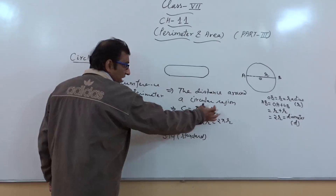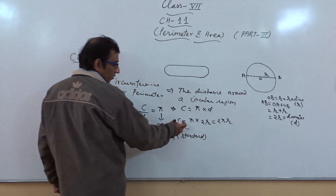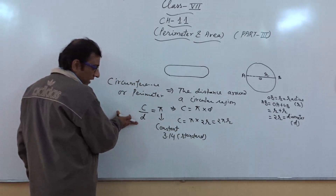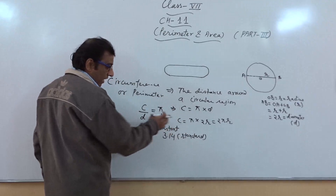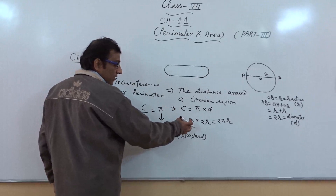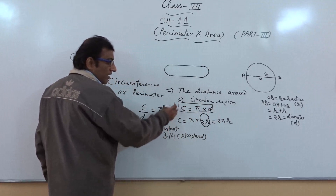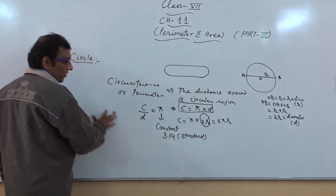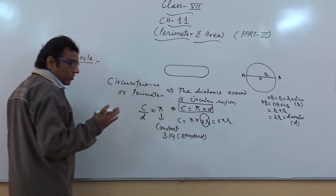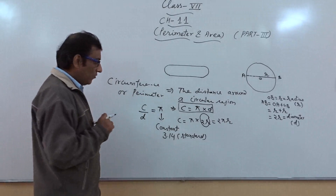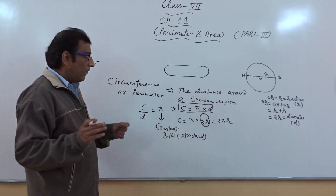So C equals pi into D. And what is D? D is the diameter, and the value of D is 2 times radius, so we can say C equals 2πr. The ratio of circumference and diameter is equal to pi. We can say circumference of a circle is more than 3 times its diameter. This is the concept related to circumference: C upon D equals pi, pi is constant with value 3.14, and C equals 2πr. With this formula we will calculate the perimeter of any circular shape.